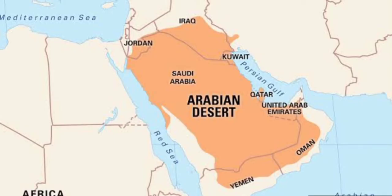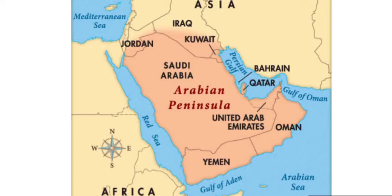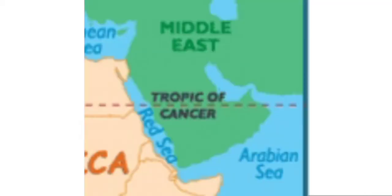In this chapter, we will learn about the Arabian desert with the example of Saudi Arabia. Saudi Arabia is located in the Arabian desert. It is surrounded by the Red Sea in the west, Arabian Sea in the south, and Persian Gulf and Gulf of Oman towards the east. In the north, Jordan, Israel, Iraq and Kuwait are situated, whereas Yemen, Oman and UAE are located in the south. The Tropic of Cancer passes through Saudi Arabia.